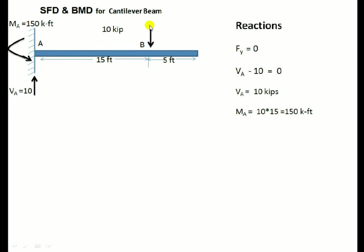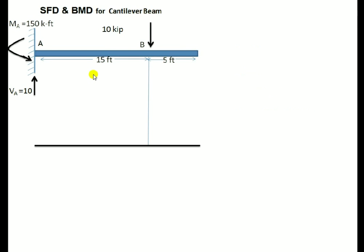So VA is equal to 10 kip, and MA is equal to 10 multiplied by 15, which is 150 k-ft. This is an anti-clockwise moment reaction over here to counter this 10 kip which is acting at 15 feet.